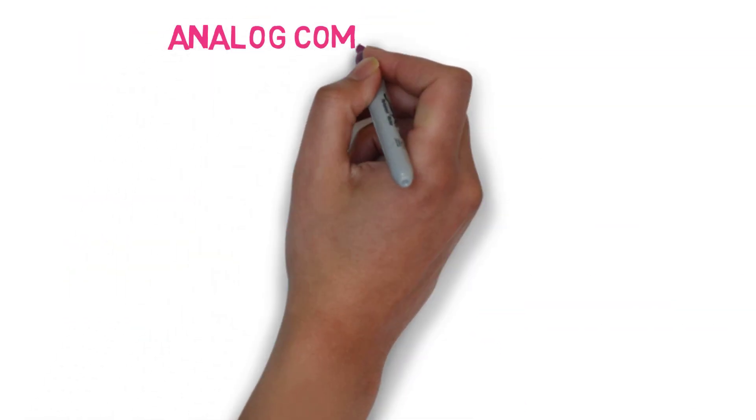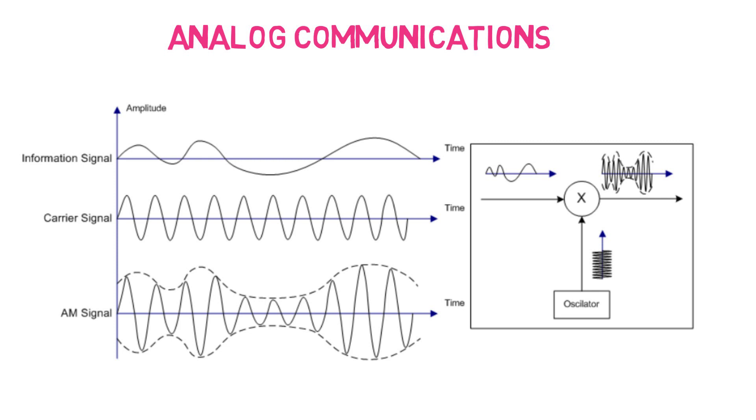We will start with analog communications. Analog communications introduces the idea of modulation. Modulation is basically using higher frequencies to send lower frequency information in order to avoid large antennas. Let's look at an example. Let's say that the first graph is part of a song you want to transmit over the air. As you can see, the signal is just arbitrary.